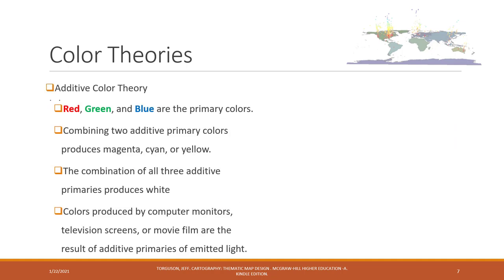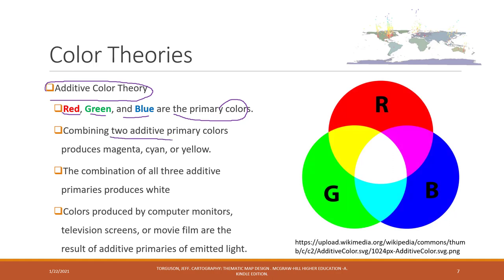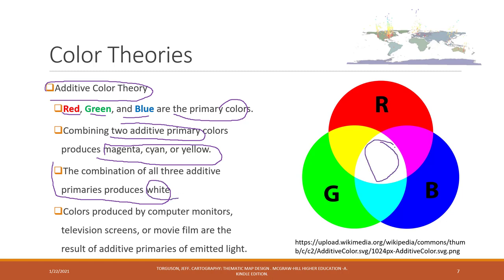There are two types of color theories. The additive color theory uses red, green, and blue as primary colors. Combining two primary colors produces three other colors, and combining all three produces white. This color theory is used by electronic screens such as computer monitors, television screens, and movie screens.